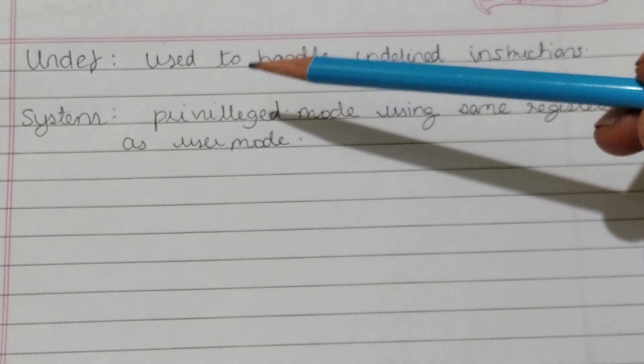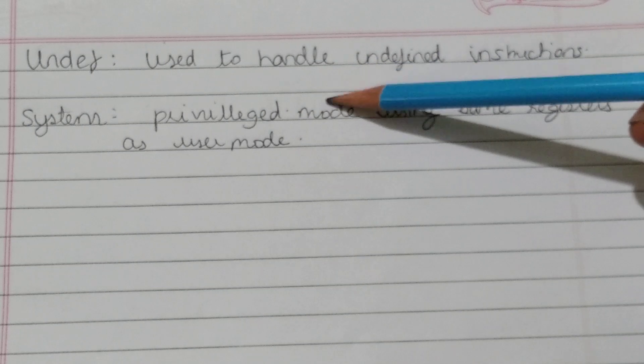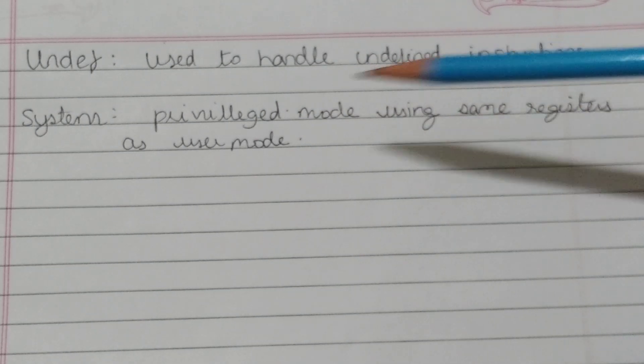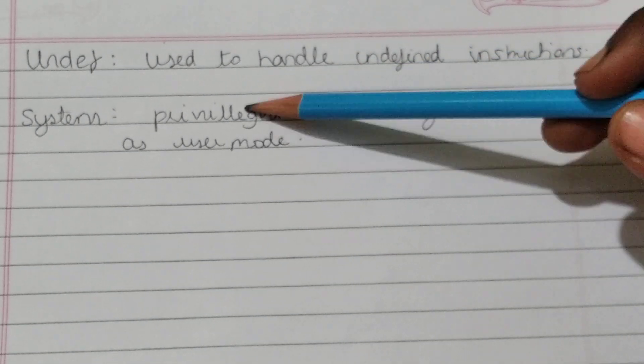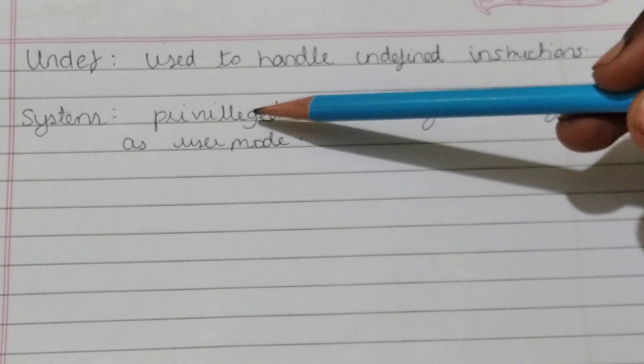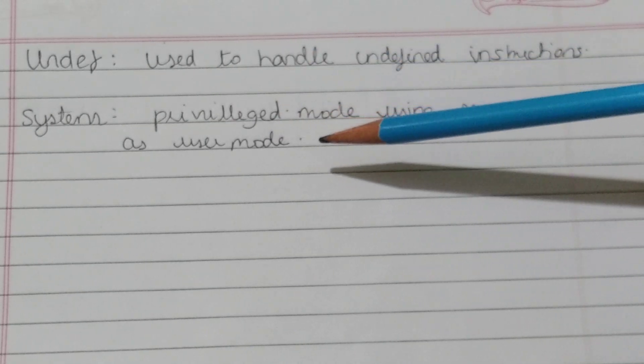Now system - so system is a privileged mode using same registers as user mode. It is a privileged mode and it is used when an operating system is in a privileged mode.